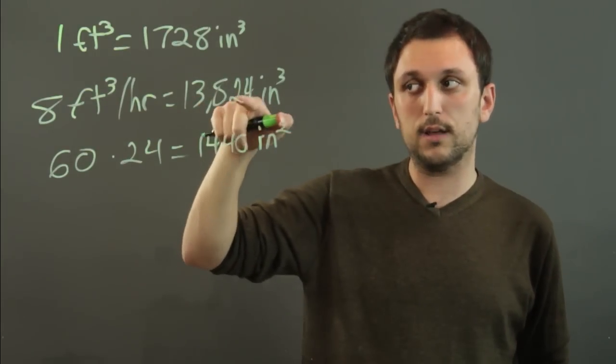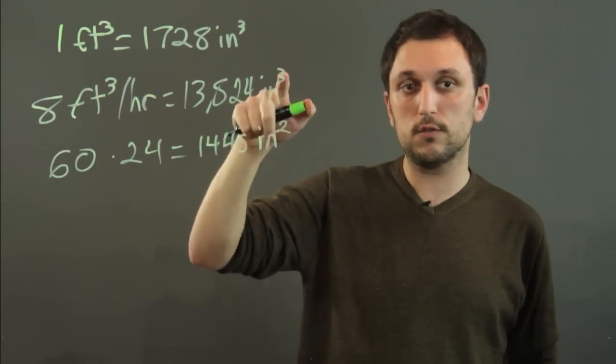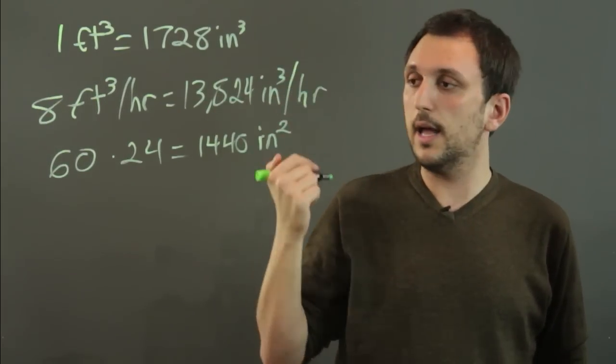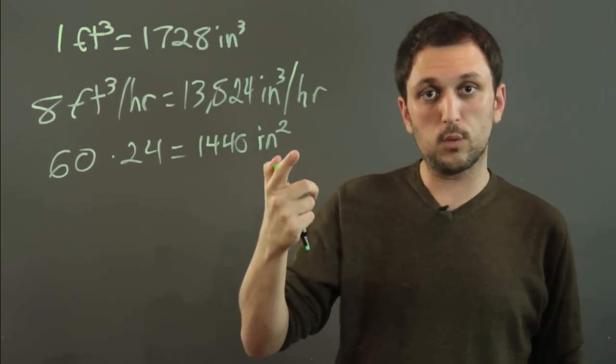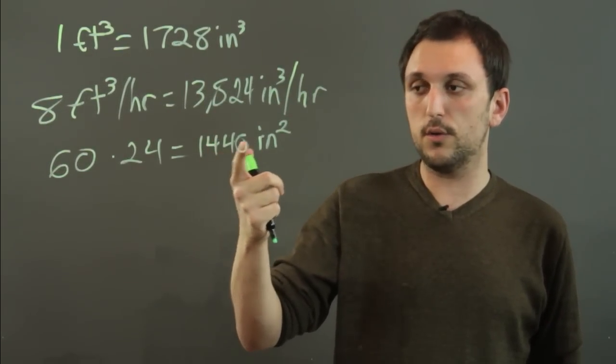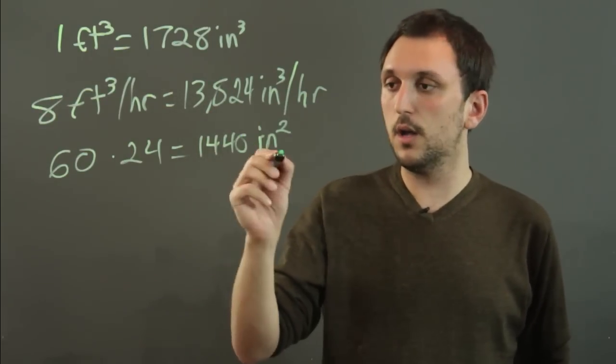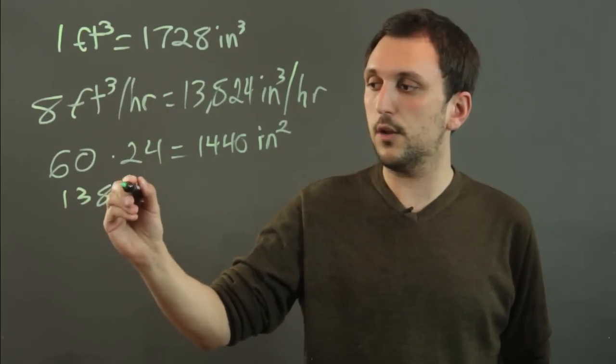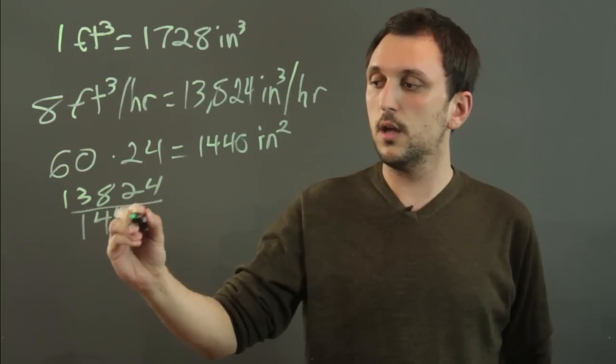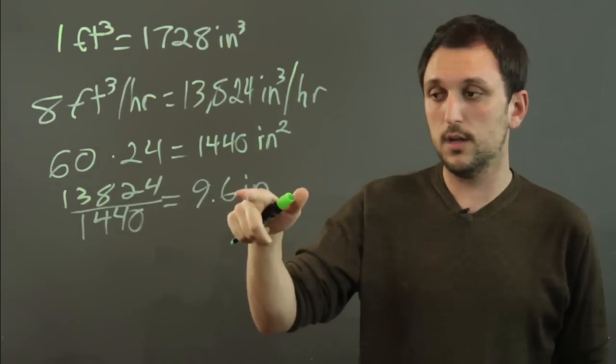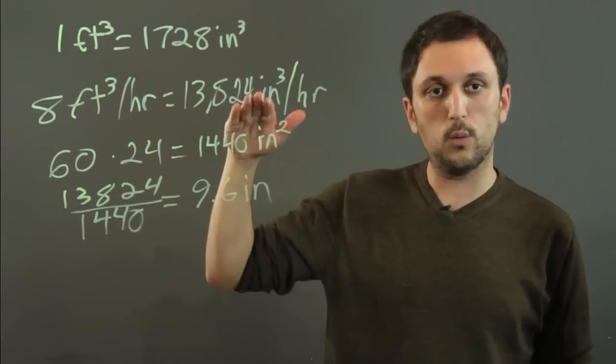We have 13,824 inches cubed of water in one hour, and it's going into a square base of 1440 square inches. We take this number and divide by this number, and 13,824 over 1440 is going to give you 9.6 inches deep. It's just the height of the water.